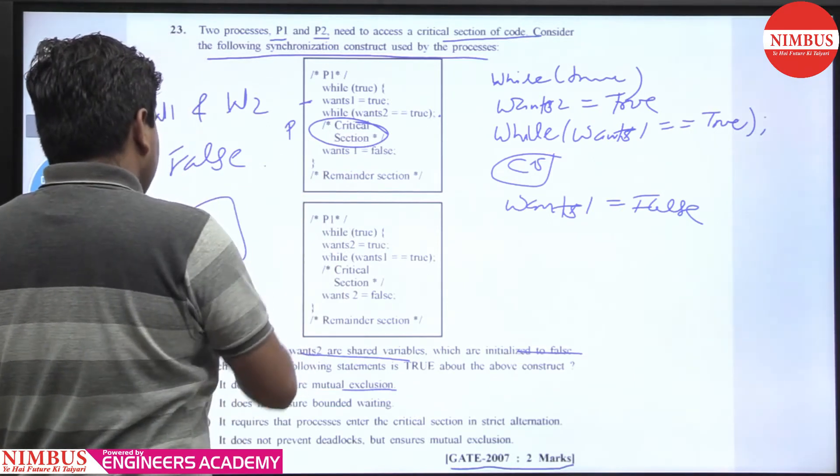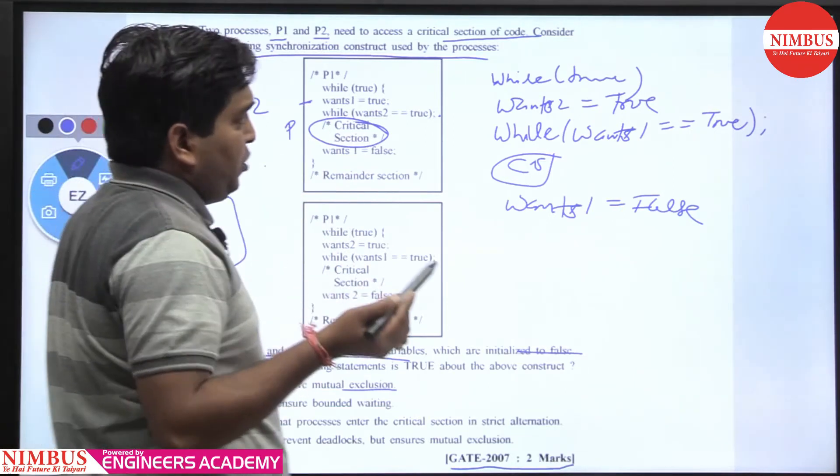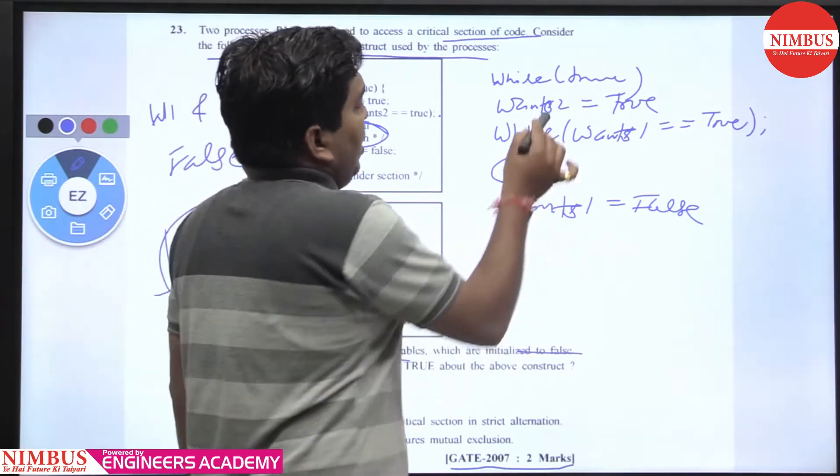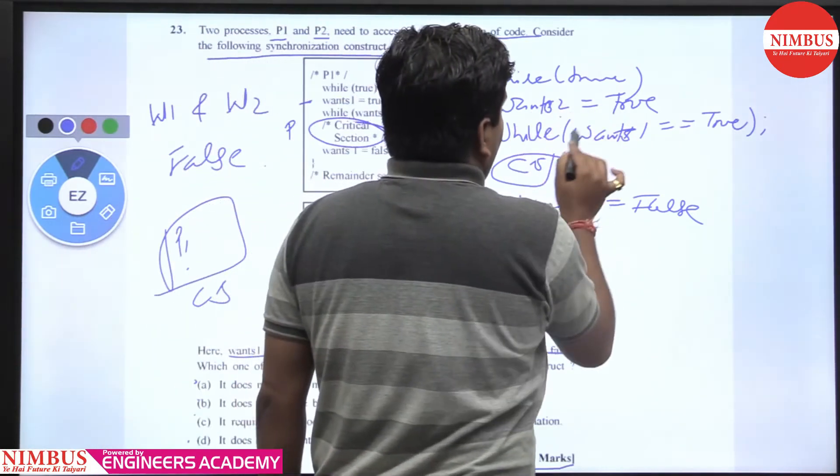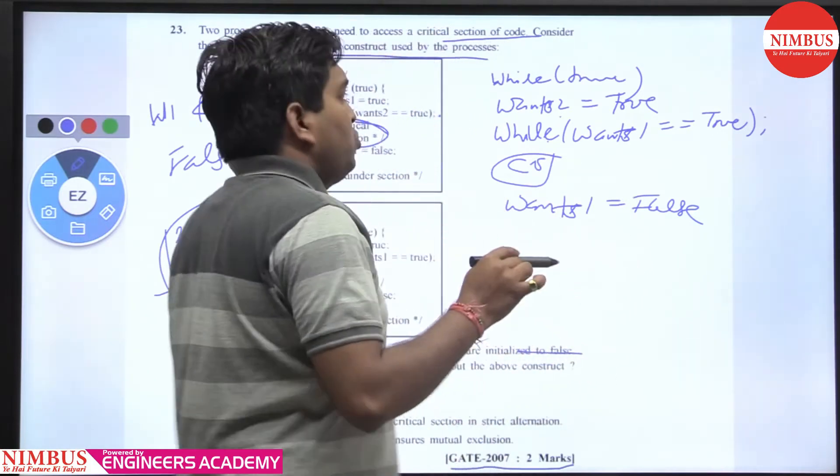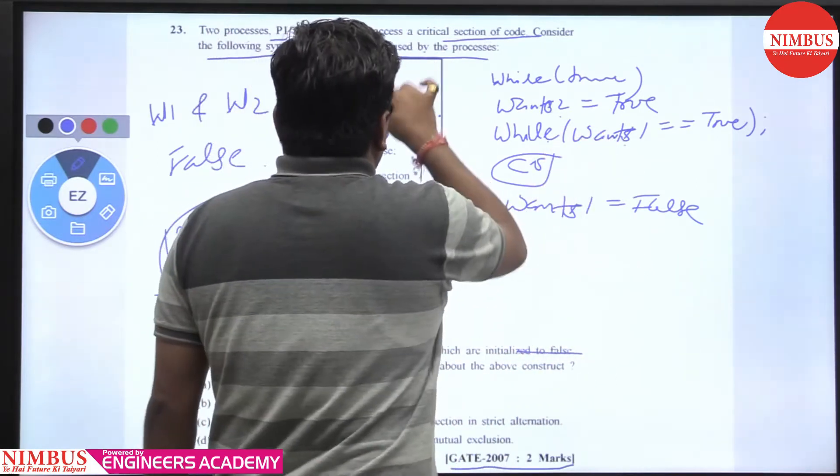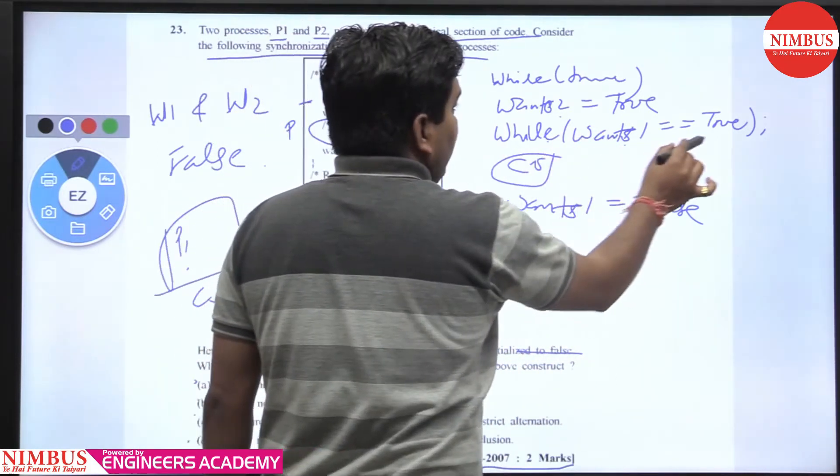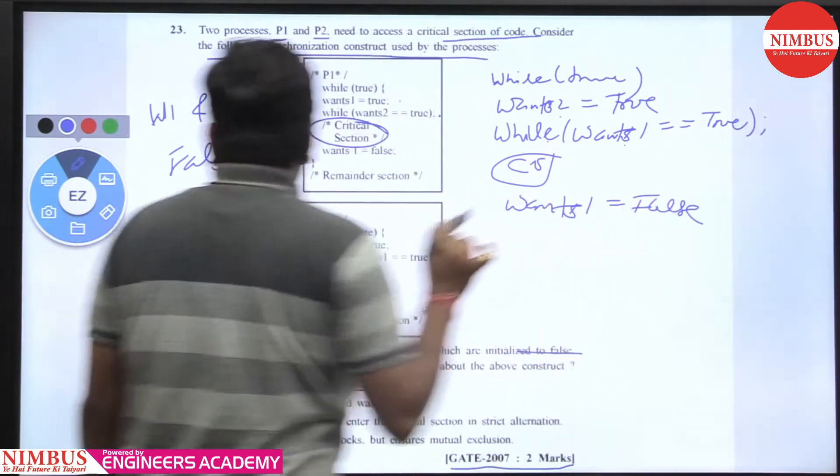When P1 is CS, then you have to check whether P2 is in CS or not. While true wants2 equal to true, wants1 equal equal to true. So it is true because when P1 comes, it makes wants1 true, so it is in infinite loop, busy waiting.